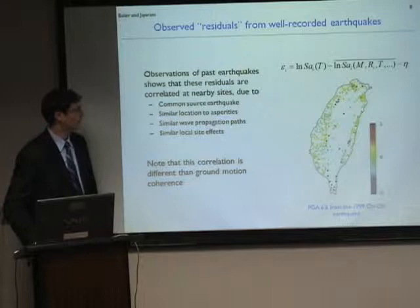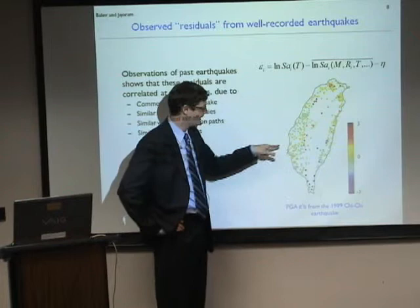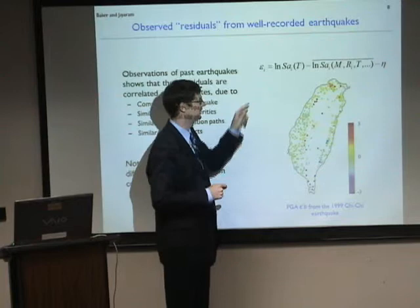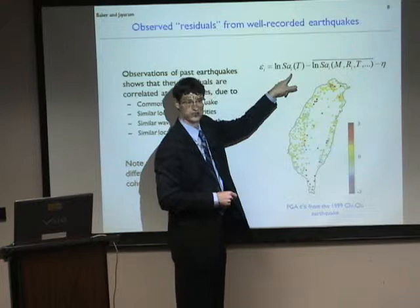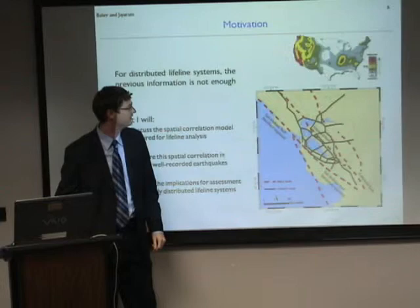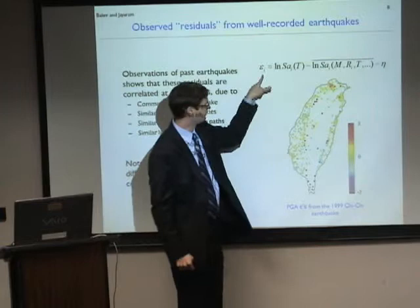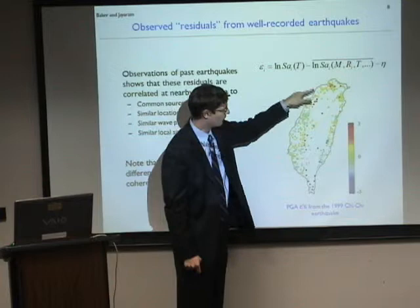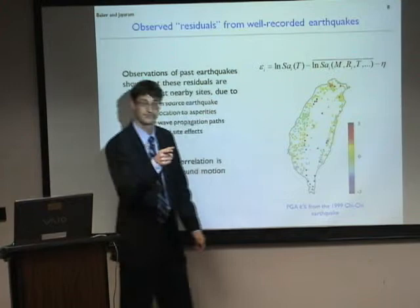Looking at observations from the Chi-Chi earthquake, with each point being an instrument location, the residuals — spectral acceleration minus the predicted mean — are shown color-coded. We see clusters of warm-colored or cool-colored observations, meaning co-located sites tend to have either all positive or all negative residuals. This makes physical sense: a common earthquake source with features not captured by magnitude alone — like asperities where energy is released, and similar wave propagation paths — would cause nearby sites to experience similar ground motion intensities.